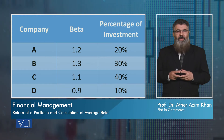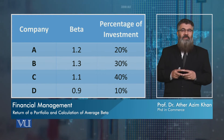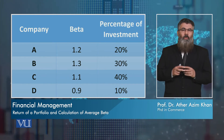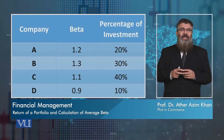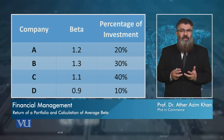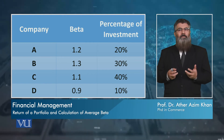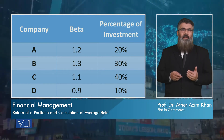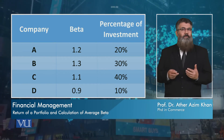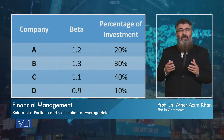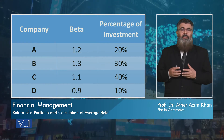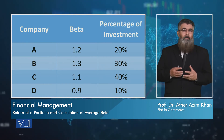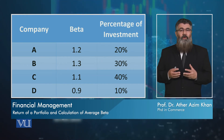What is a weighted average? It is nothing but averaging the beta values while also considering the percentage of investment made in each stock. A simple average would just add the beta values of companies A, B, C, and D and divide by 4 — but that would be incorrect.